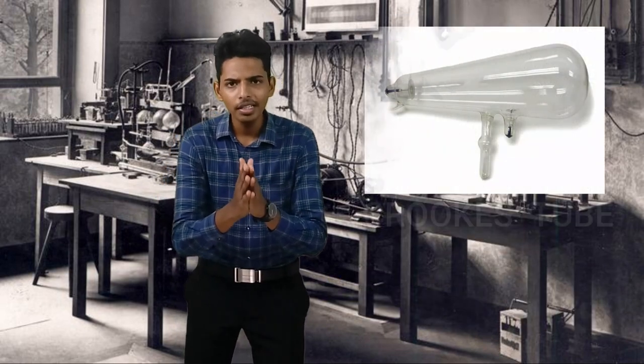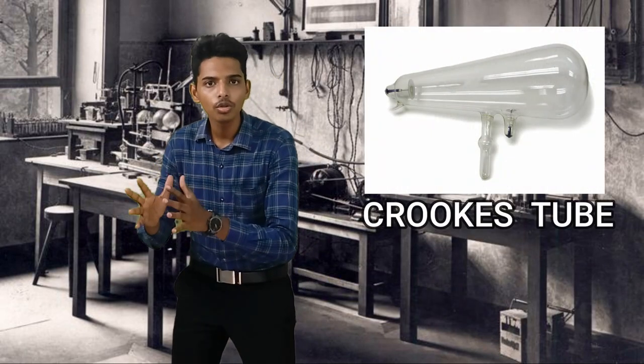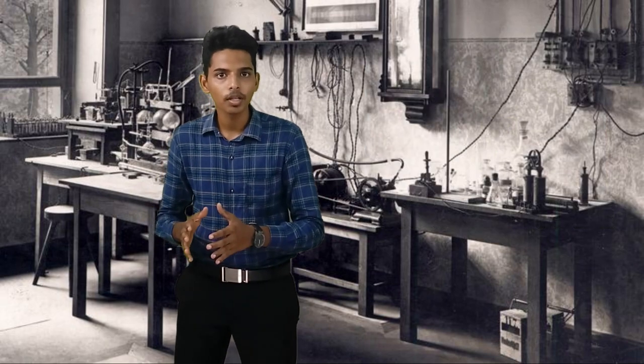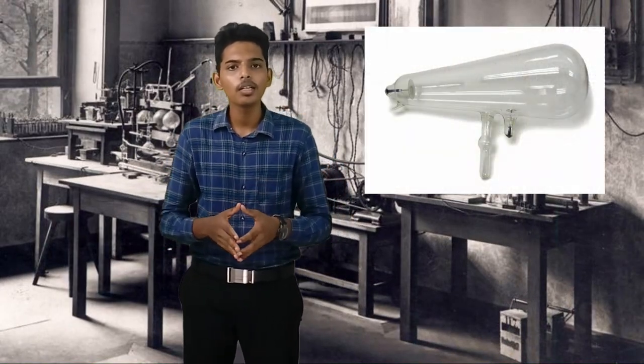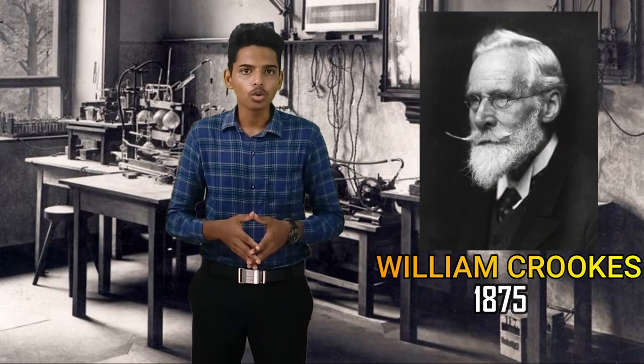When he was investigating the Crookes tube, he noticed these rays. This Crookes tube was first invented in 1875 by a British chemist called William Crookes. The main intention of his discovery was to see how electricity conducts with air when it was filled at low pressure in the tube.